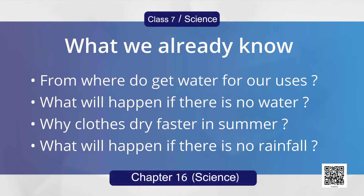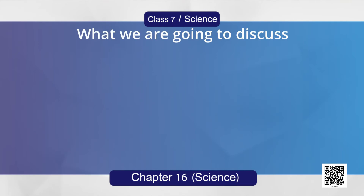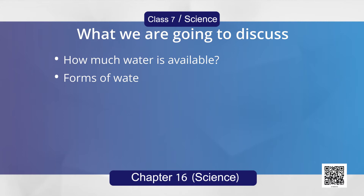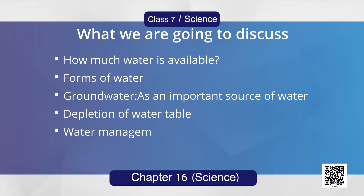Now dear children, let us see what we are going to discuss in this chapter: how much water is available, forms of water, groundwater as an important source of water, depletion of water table, water management, and effects of water scarcity on plants.